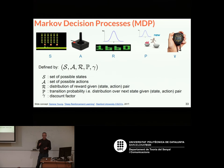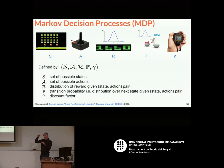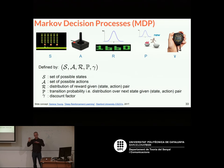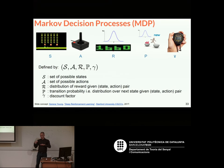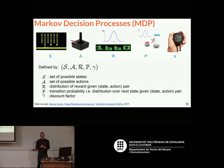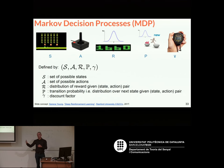Finally there's gamma, called the discount factor. In many cases, apart from trying to train the agent to get the highest cumulative reward — the highest score in the video game — we also want to reach there as soon as possible. So we need some factor that will tell us that taking more steps is bad; that's going to penalize us. That's what gamma models. You'll see it in the next equations — it's a discount factor that forces the agent to solve the task and achieve the highest reward as quickly as possible.